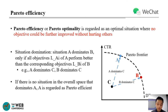To address the multi-objective recommendation, Pareto-Efficiency is introduced, which is regarded as an optimal state where no objective could be further improved without hurting others. The first key notion is domination: situation A dominates B only if all objectives of A perform better than those of B. In the right figure, both CTR and dual-time of A are better than those of C, so A dominates C, and similarly B dominates C. If no situation in the overall space dominates A, then A is regarded as Pareto-Efficient. In this work, we want our model to reach a Pareto-Efficiency point.